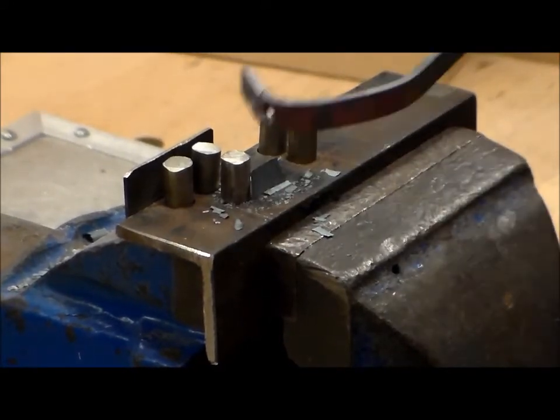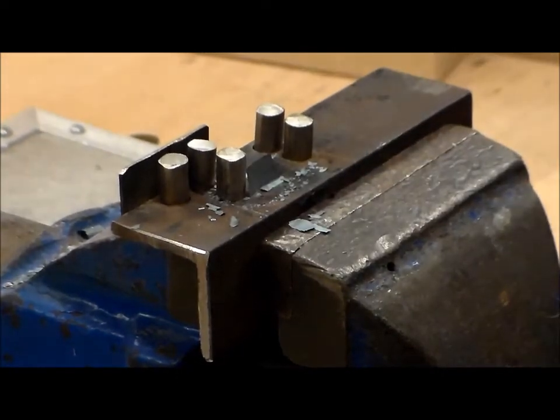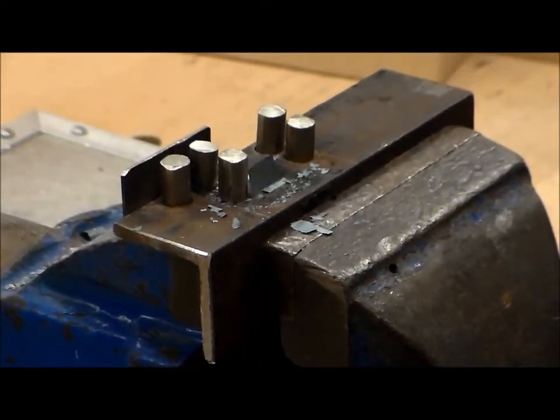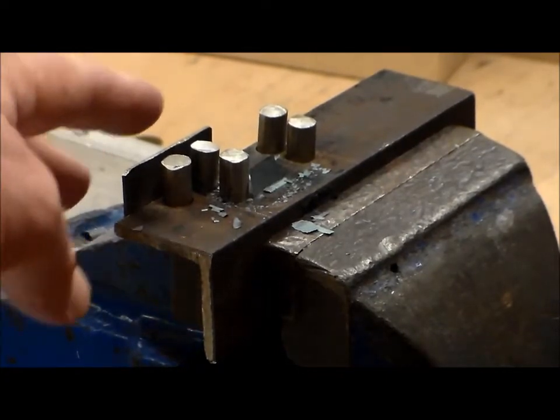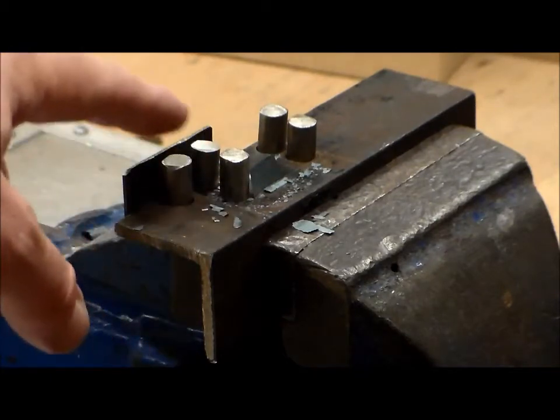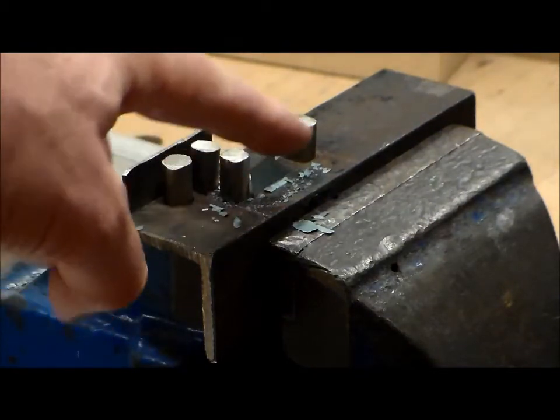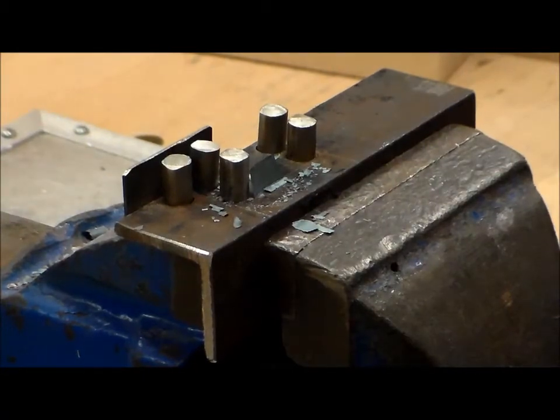Sometimes it might need a couple of goes at this, so you might need to heat it a second time to get the full shape. As you can see here, the jig has a stop that we push the metal into, and then it bends round these parts to form the body of the G clamp.